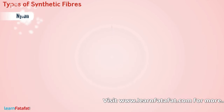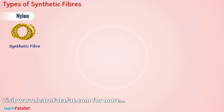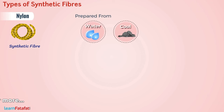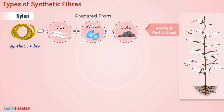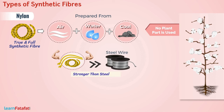Next, we will speak about nylon. It is also a synthetic fiber. It was prepared from coal, water, and air without using any plant part, which makes it the first true and fully synthetic fiber. Nylon thread is known for its strength. You will be surprised to know that a nylon thread is stronger than a steel wire.